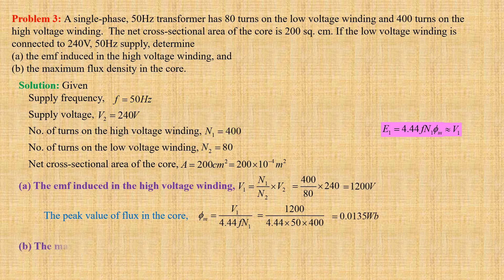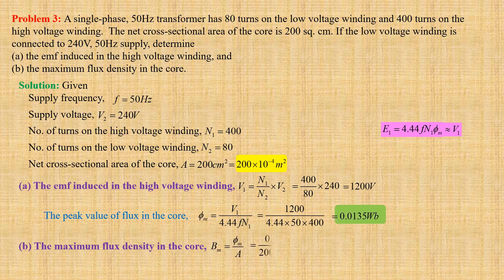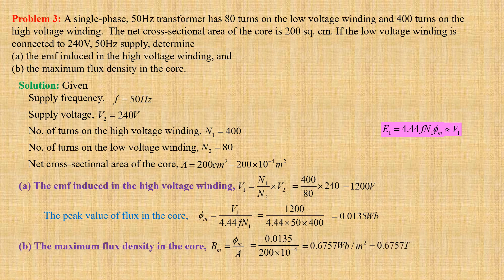The maximum flux density in the core Bm equals φM divided by A, that is 0.0135 divided by 200 × 10⁻⁴, which gives us 0.6757 Weber per meter square, or 0.6757 Tesla.